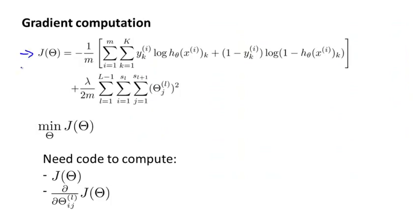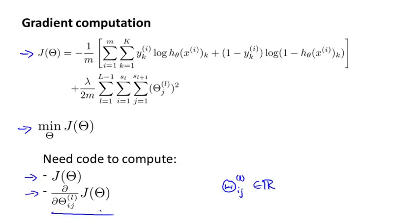Here's the cost function that we wrote down in the previous video. What we'd like to do is try to find parameters theta to minimize J of theta. In order to use either gradient descent or one of the advanced optimization algorithms, we need to write code that takes as input the parameters theta and computes J of theta and these partial derivative terms. Remember that the parameters of the neural network are theta superscript l subscript ij, which is a real number, and so these are the partial derivative terms we need to compute.